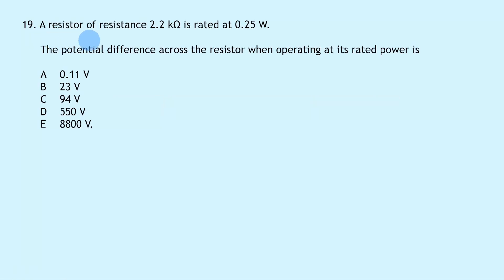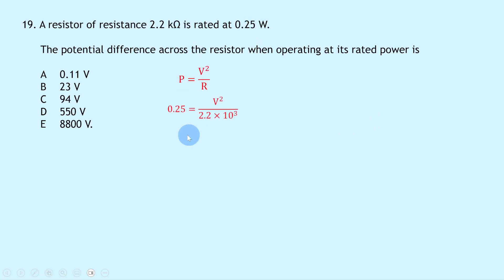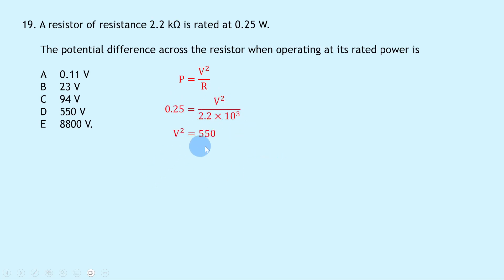Question 19 says a resistor of 2.2 kΩ is rated at 0.25 W. Using P = V²/R: 0.25 = V² / (2.2 × 10³). Cross-multiplying gives V² = 0.25 × 2.2 × 10³ = 550. Taking the square root gives V = 23 volts, which is answer B.